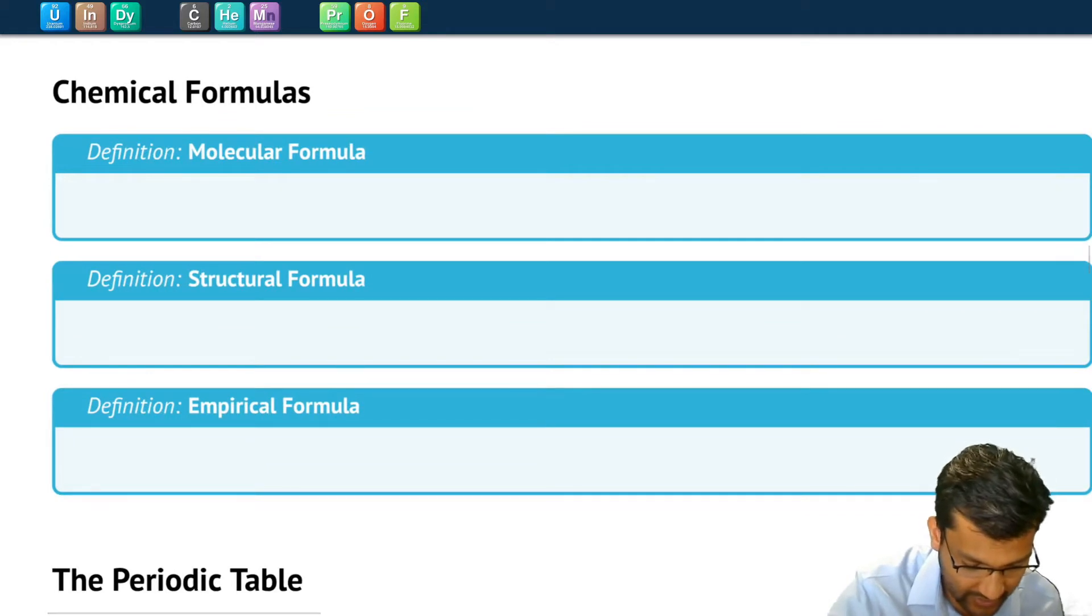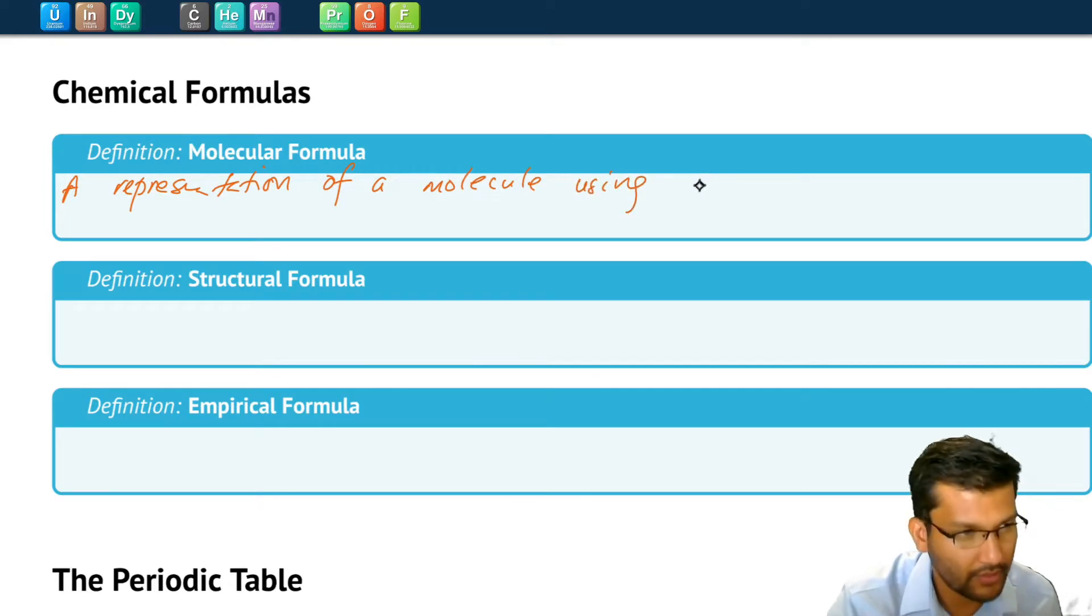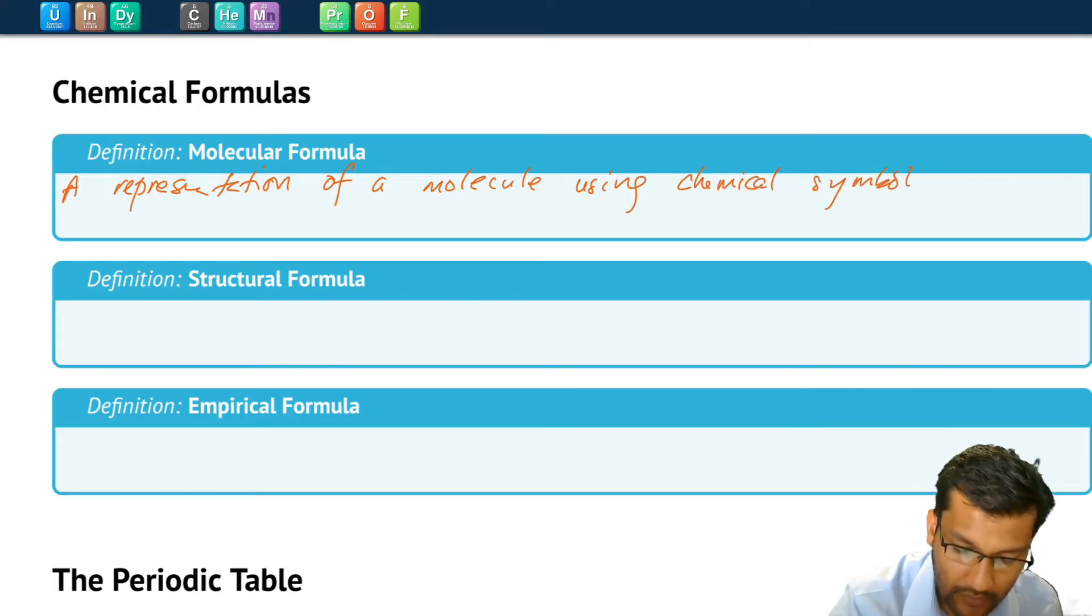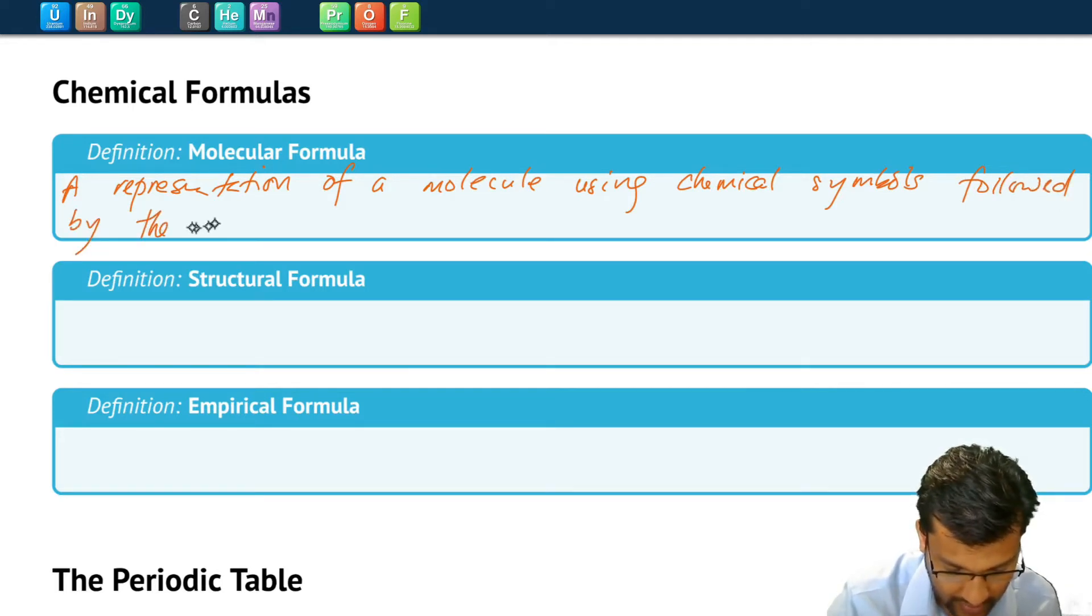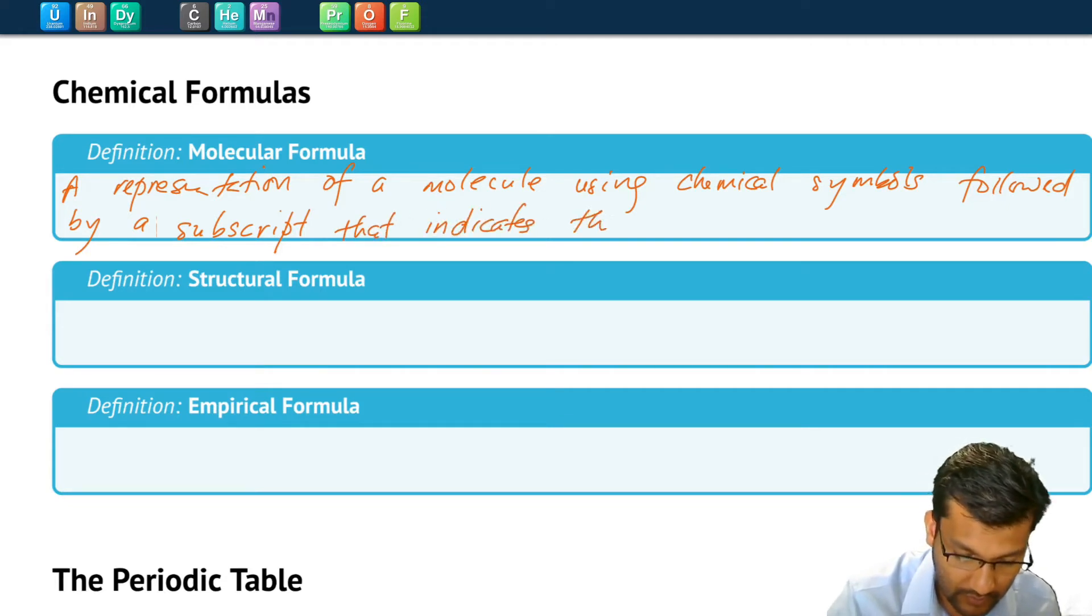So a molecular formula is a representation of a molecule using chemical symbols that we've learned about, followed by a subscript that indicates the number of that atom, the number of that element.